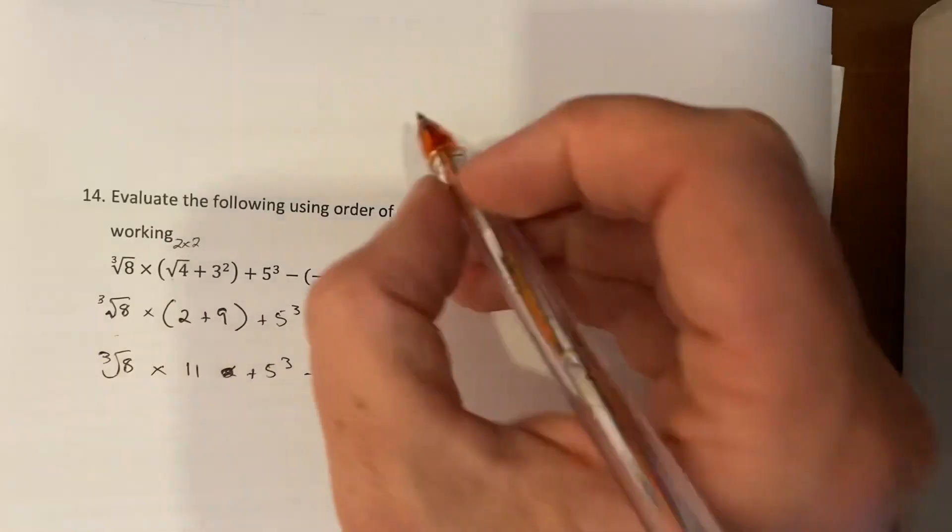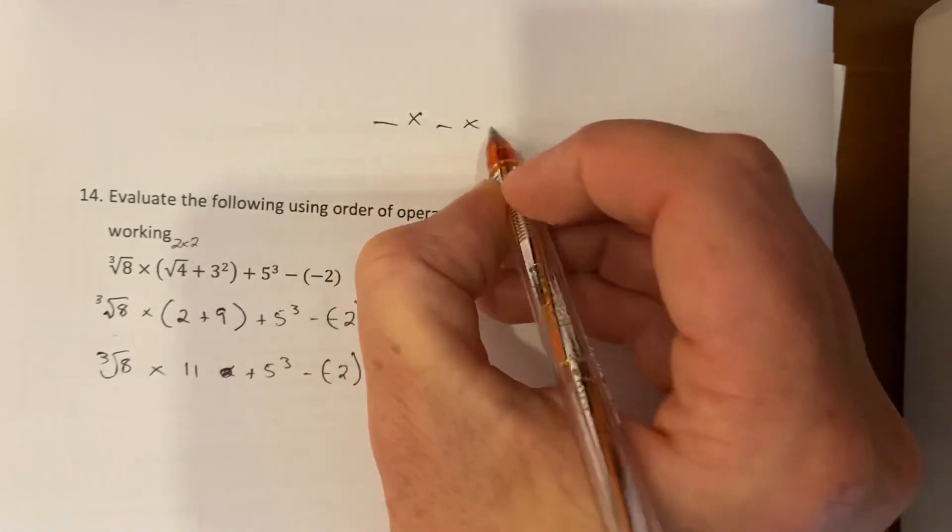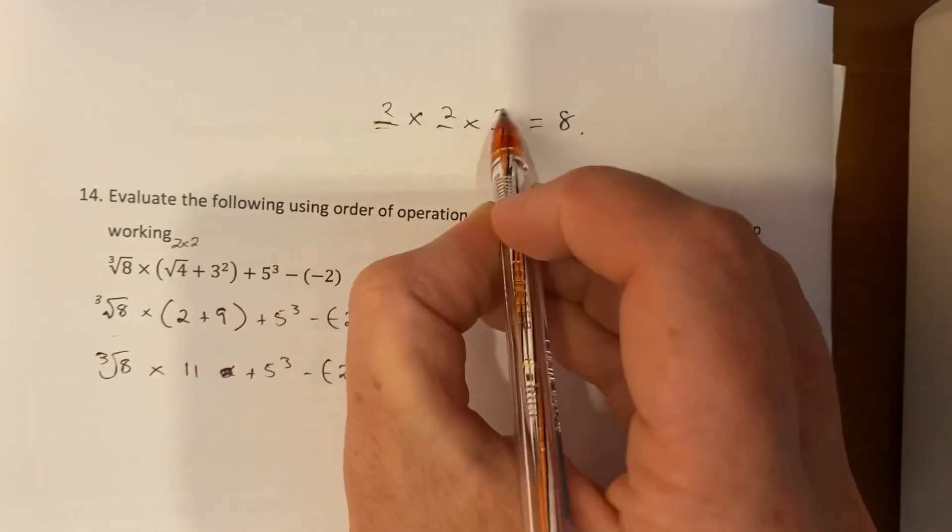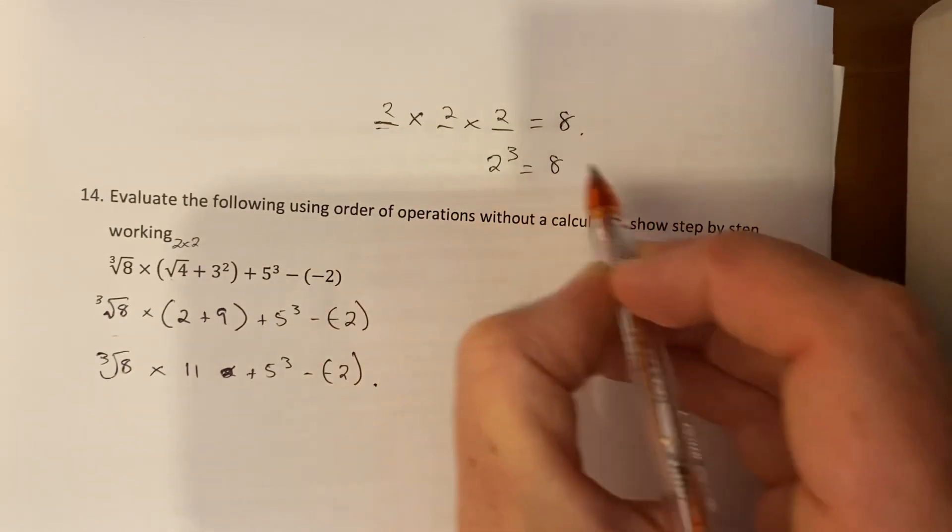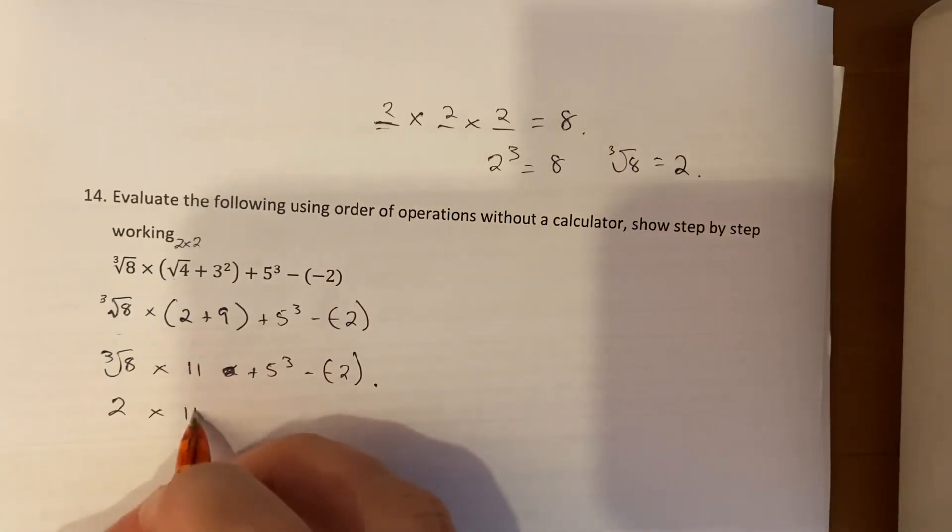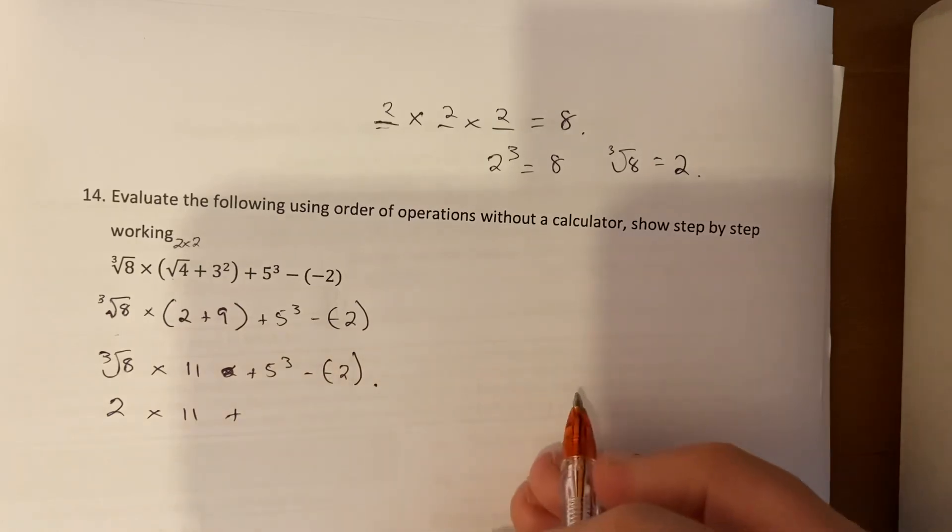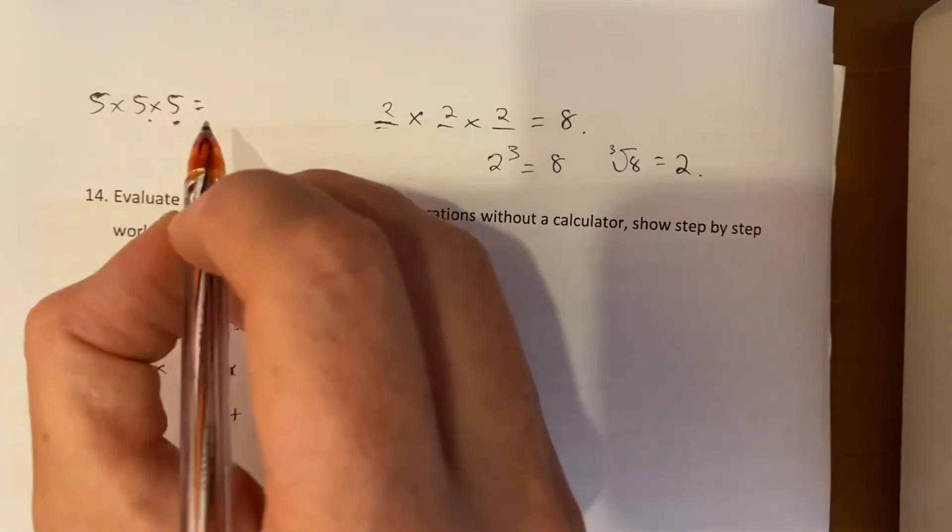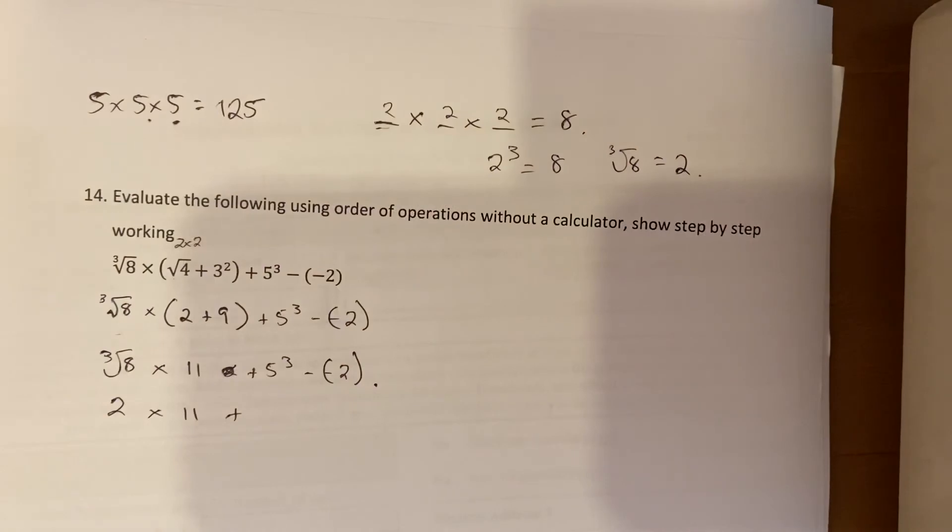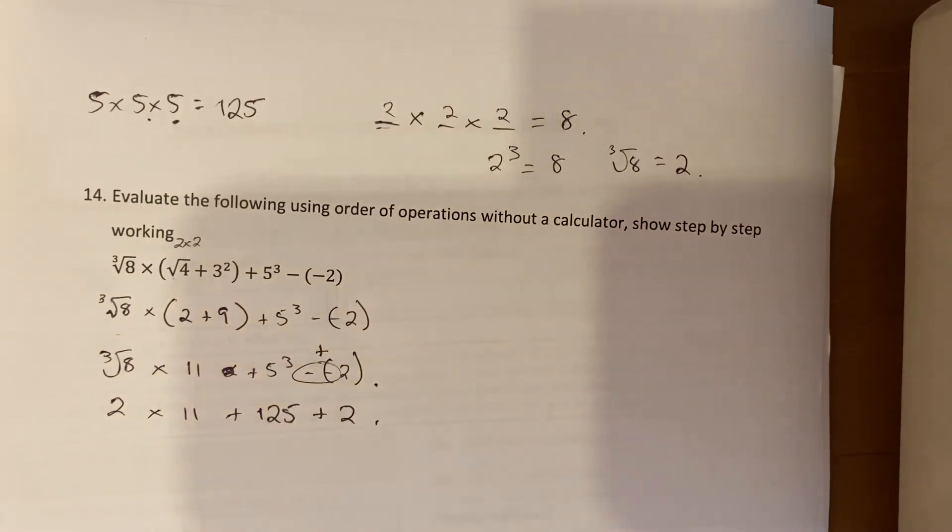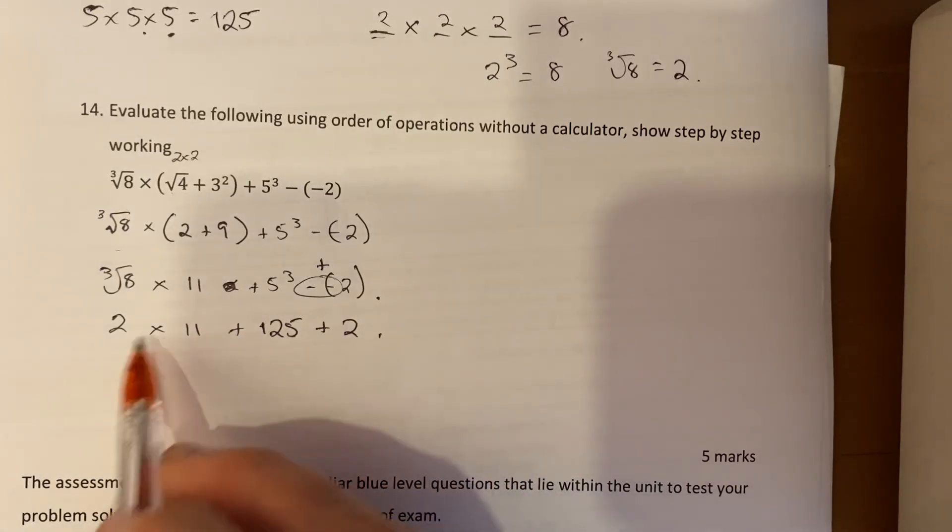So the cube root of 8 - what number multiplied by itself three times gives 8? So something by something by something equals 8. That's the cube root of 8 we're looking for. I think 2 times 2 times 2, in other words 2 cubed is 8, so the cube root working opposite around must be 2. So 2 times 11. 5 cubed, well that's 5 times 5 times 5 - 5 times 5 is 25, multiplying again by 5: 125. If you're stuck on that you can use a calculator for that. Minus minus is a plus, so put that in. Now the exponents are dealt with, multiplication next.